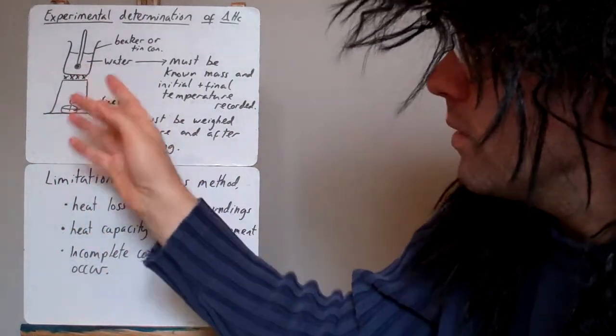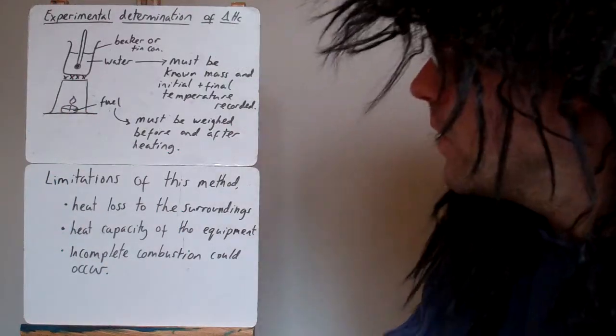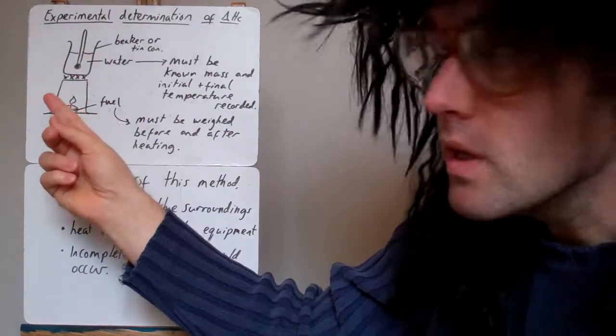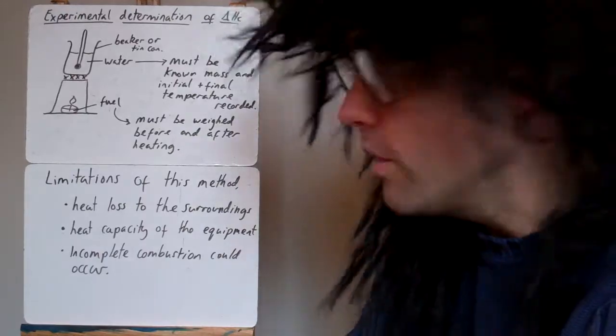When I say surroundings, I don't mean to the water, I mean to the air and around. Heat capacity of the equipment. So to heat up the water, we have to heat up probably a tripod first and the gauze and we have to heat up whatever is containing the water, the beaker or the tin can.